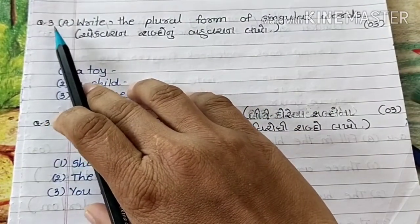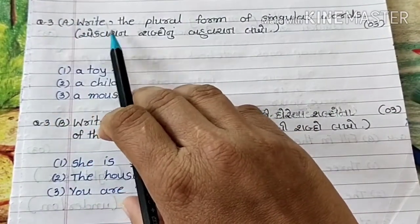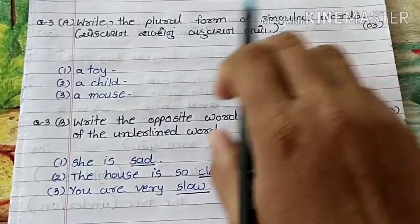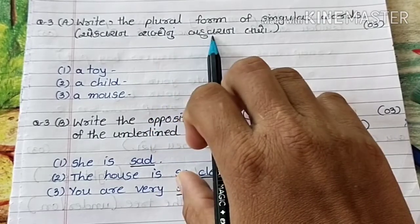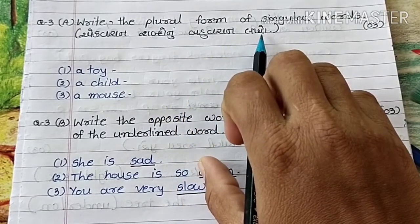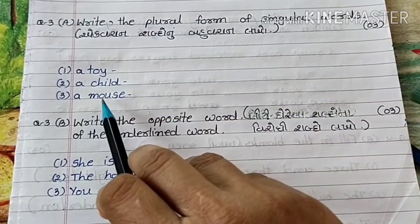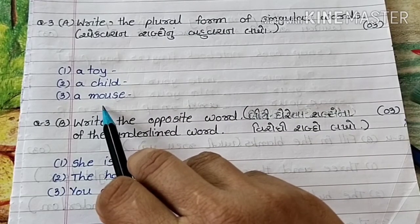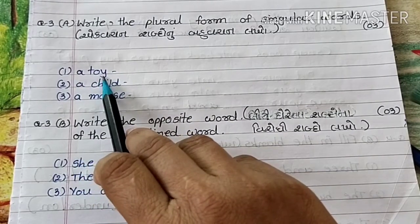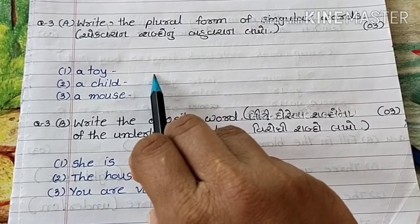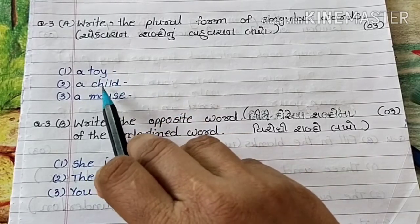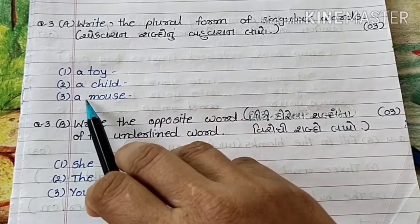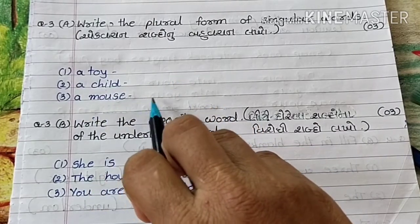Question 3A: Write the plural form of singular words. Friends, we have learned this in our lessons. A toy — toys. A child — children. A mouse — mice.